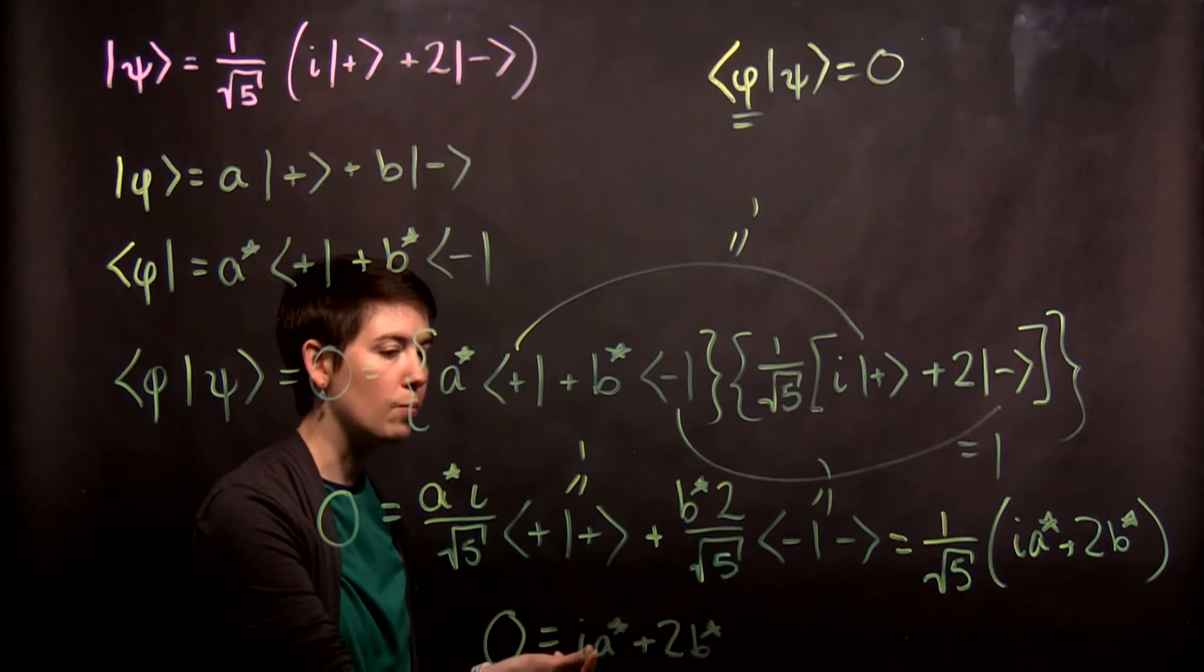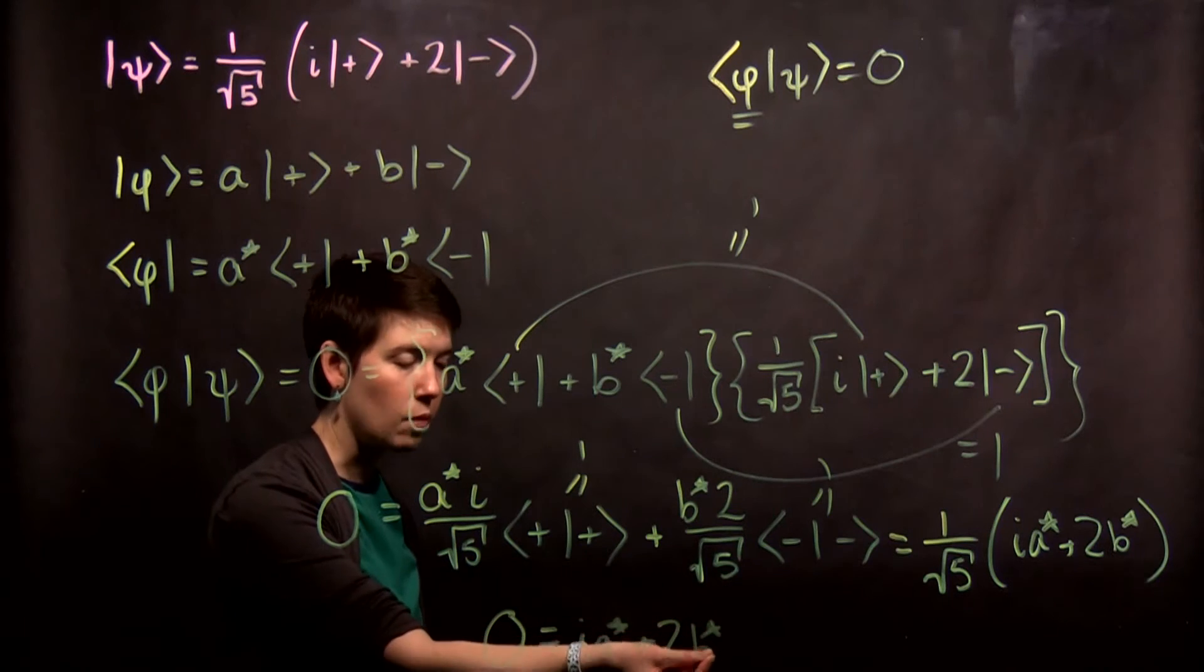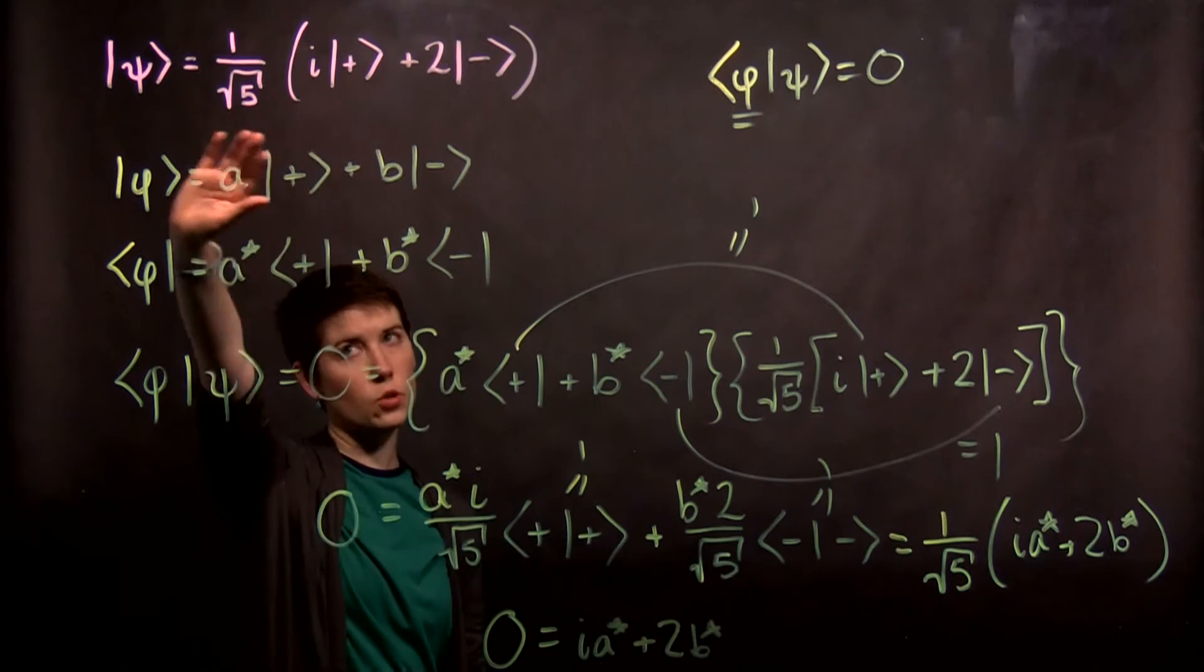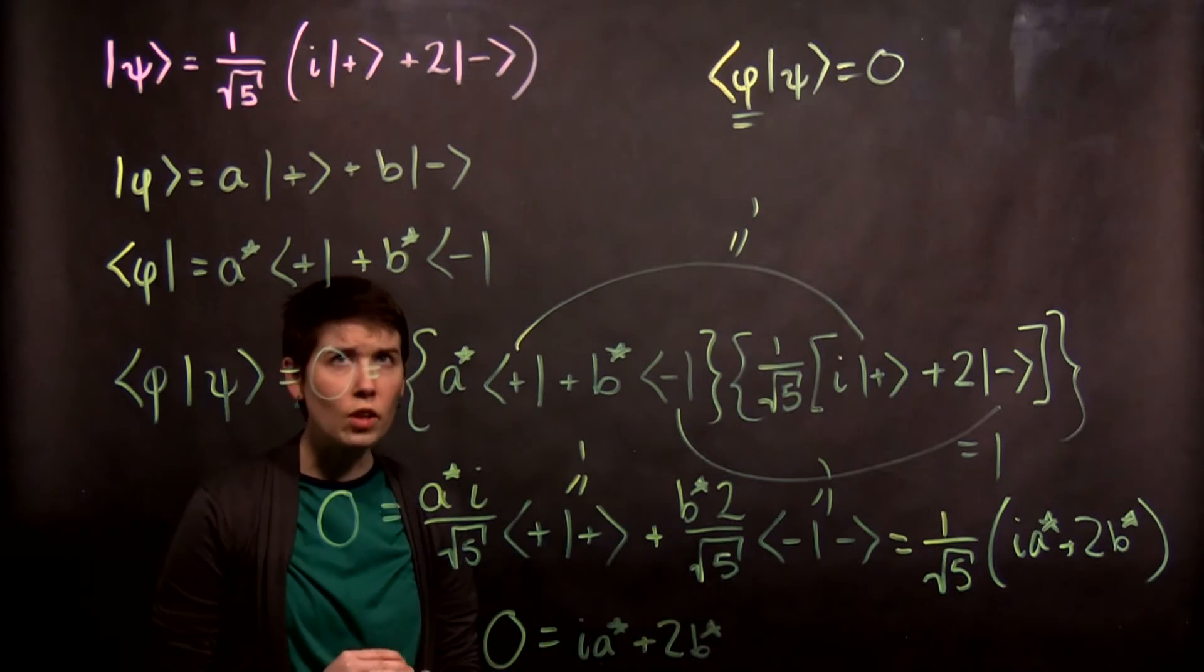This is giving us a relationship between a star and b star. And obviously those relate to our original coefficients.